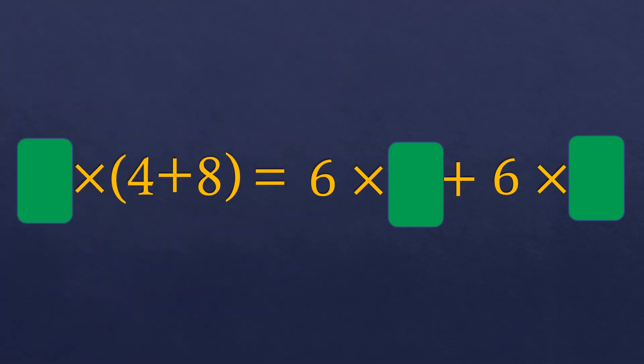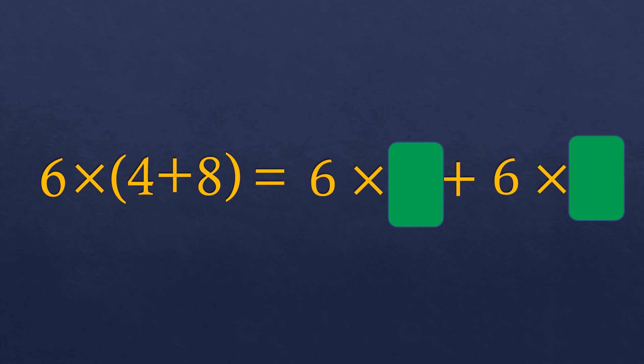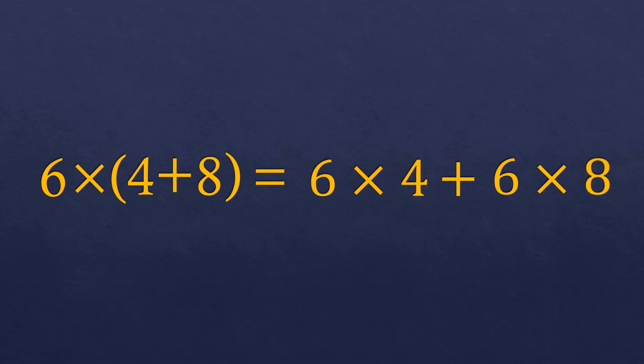Now we have: blank times (4 plus 8) equals 6 times blank plus 6 times blank. On the right side, there is 6 in both terms, so the missing number on the left must be 6. The two missing numbers on the right correspond to the two numbers on the left — 4 and 8. So it becomes 6 times (4 plus 8) equals 6 times 4 plus 6 times 8. This is the distributive property, where the 6 is distributed to 4 and 8.